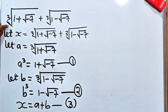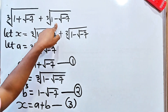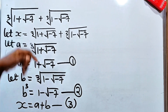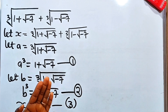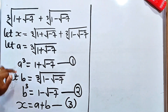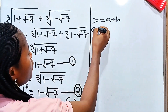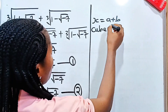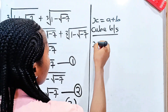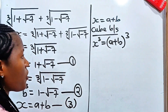Recall that these are cube roots, so I need to cube them to get the value of x. If x equals a plus b, let's cube both sides. So we have x³ is equal to (a + b)³.